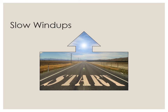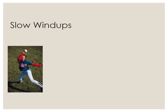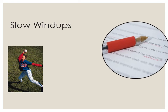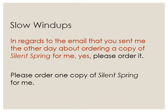Another place to look for wordiness is at the start of your essays, paragraphs, or sentences. As in baseball, some writers do a slow wind-up with extra words before actually pitching the ball by saying what they mean. Getting rid of those extra words makes their message clearer. For example, the beginning of this sentence rambles on: "In regards to the email that you sent me the other day about ordering a copy of Silent Spring for me, yes, please order it." The point of the writer's message is buried at the end. Cutting words from the beginning and rearranging the remaining words gets to the point quicker: "Please order one copy of Silent Spring for me."